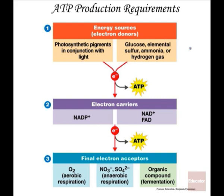Here are the different ways in which ATP can be produced. We can produce ATP through photosynthesis or photosynthetic pigments in combination with light. Starting with glucose, we generate ATP, and depending on the type of metabolism, we can have electron carriers NADP, NAD, or FAD at the end. For aerobic respiration, oxygen is required as the final electron acceptor; for anaerobic respiration or fermentation, an organic compound serves that role.